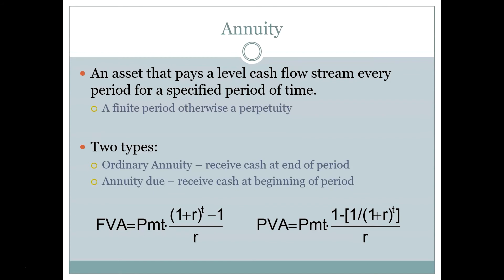When you solve for time value of money on the calculator you are explicitly solving for an annuity. All the problems we've already worked using the five TVM keys have been solving annuity problems. Any asset that has a level cash flow and doesn't go on forever is an annuity type, and we can use the TVM keys and normal calculator functions to solve for present value or future value.